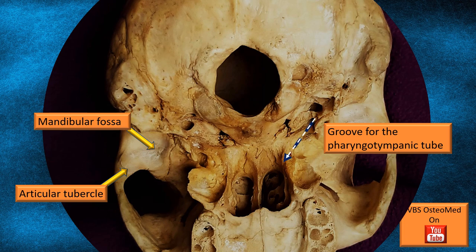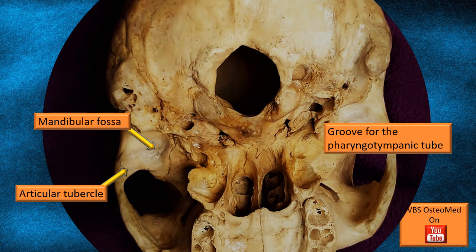A few more items also seen in norma lateralis are clearly visible in this view as well. Most importantly, at the junction of the petrous part of the temporal bone and the greater wing of the sphenoid, there is a small pit-like linear groove. That groove is for the pharyngotympanic tube, or the eustachian tube. It has two components: a bony component and a cartilaginous component. The cartilaginous component runs along the flashing dotted arrow, and posteriorly it is continuous with the osseous canal. Anteriorly, it opens into the nasopharynx.